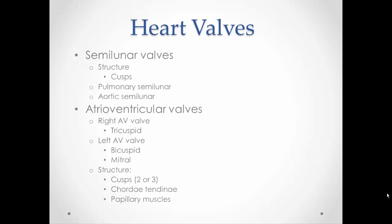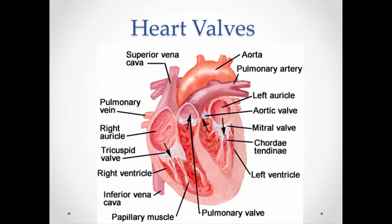The heart valves control blood flow and prevent backflow in the wrong direction. There are two sets: the semilunar valves — the pulmonary semilunar valve and the aortic semilunar valve — and the atrial ventricular (AV) valves between the atriums and ventricles. The right AV valve is called the tricuspid; the left is called the bicuspid or mitral valve. A bicuspid valve has two cusps; a tricuspid has three. The AV valves also have chordae tendineae and papillary muscles for added support.